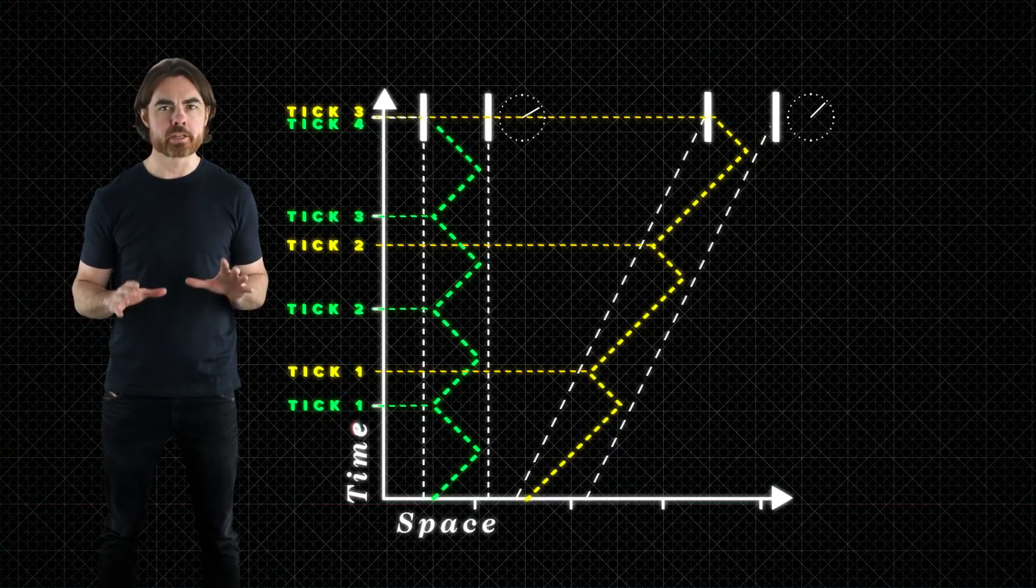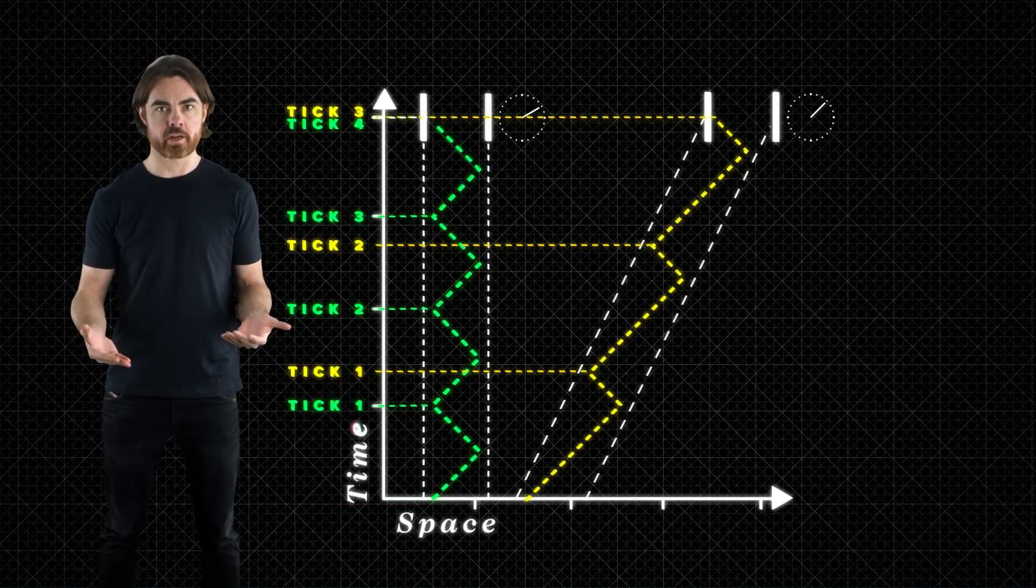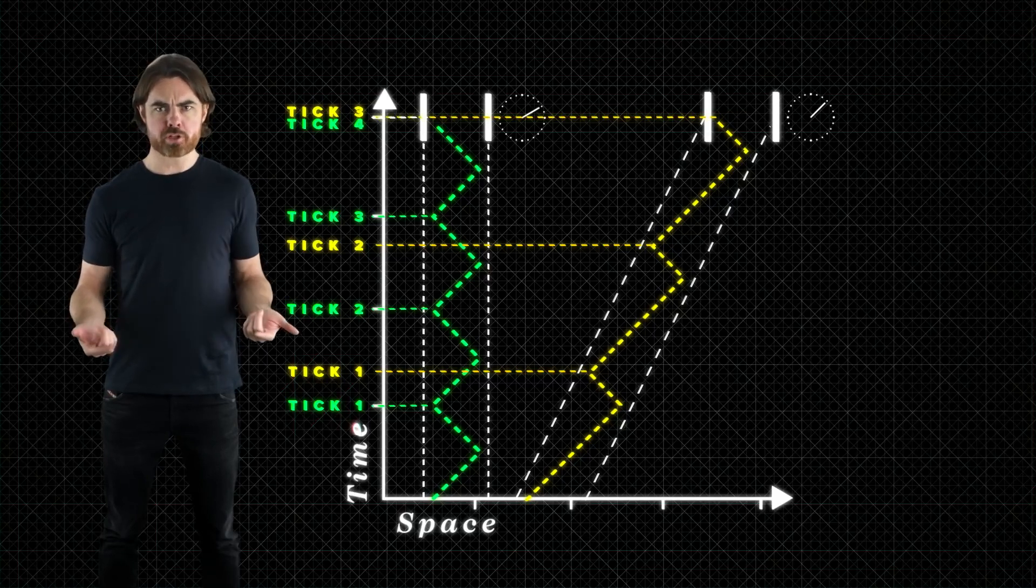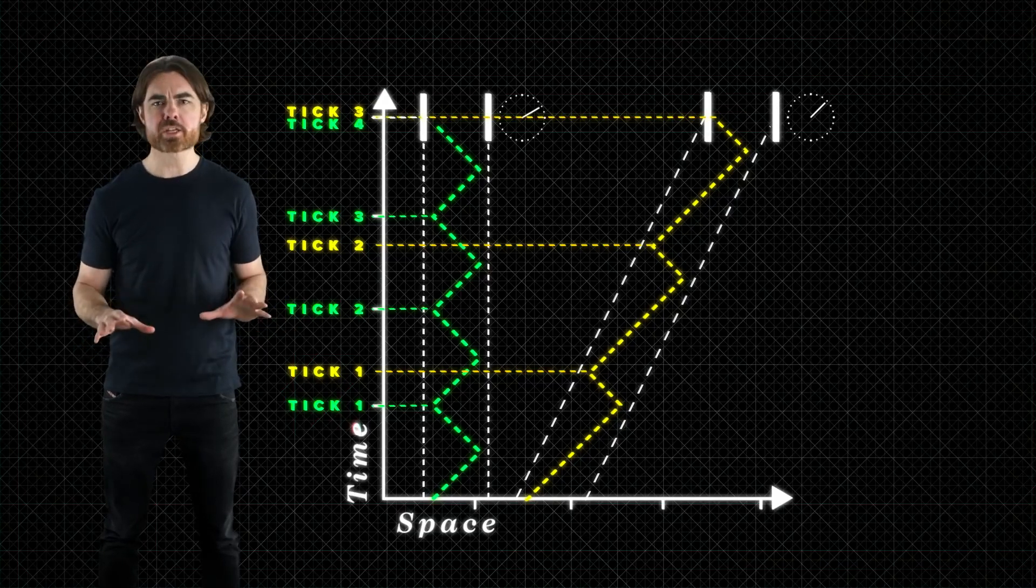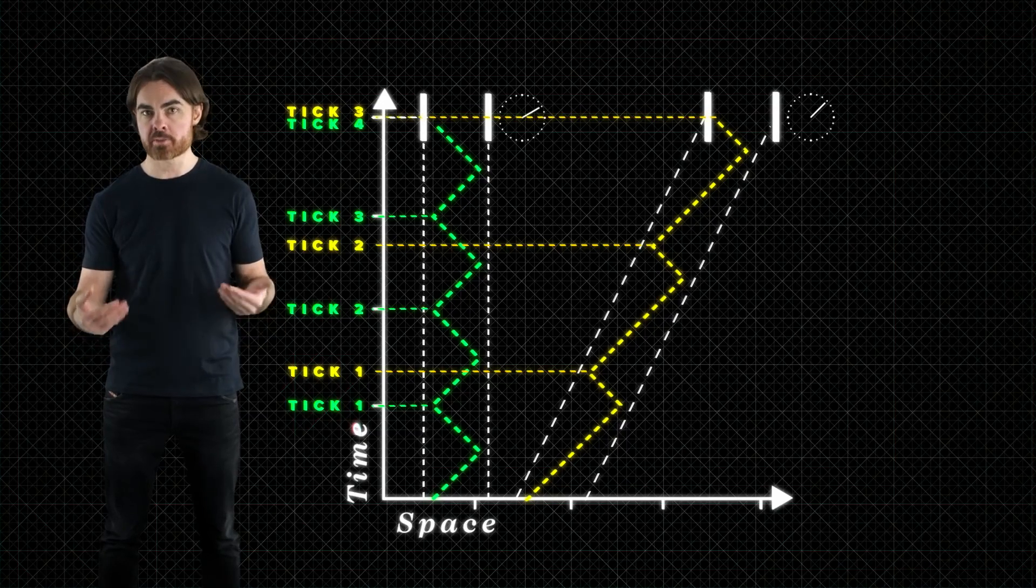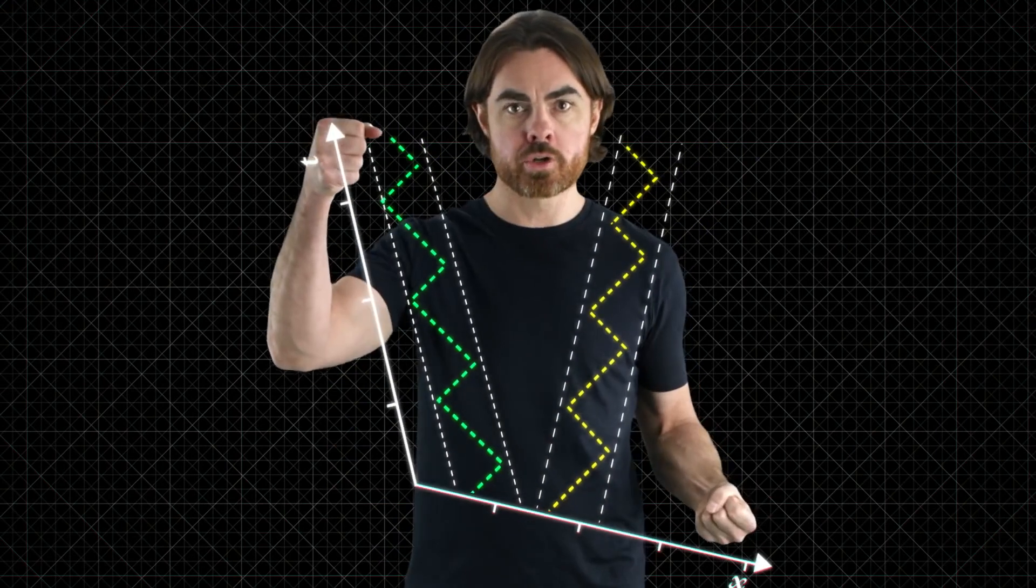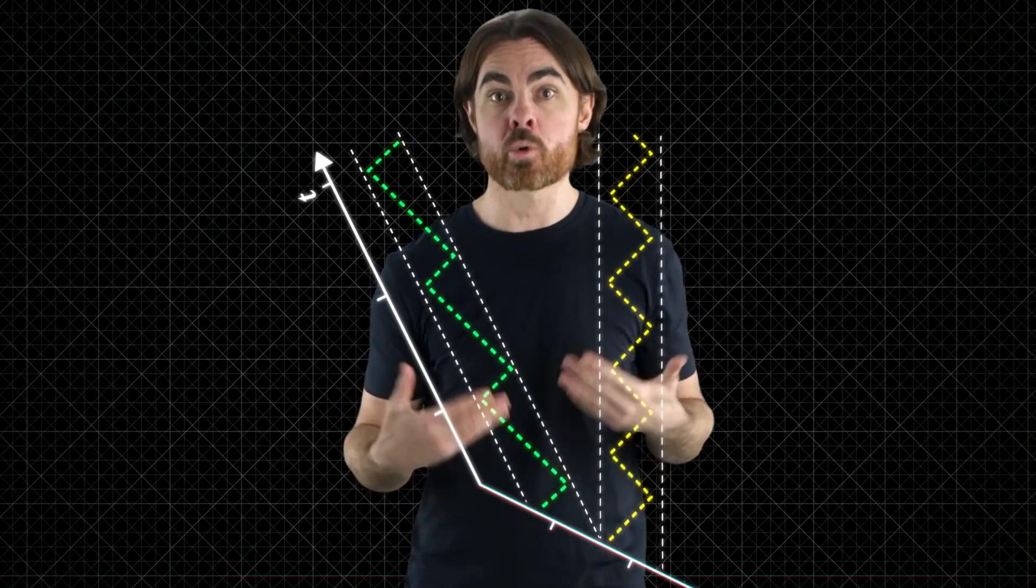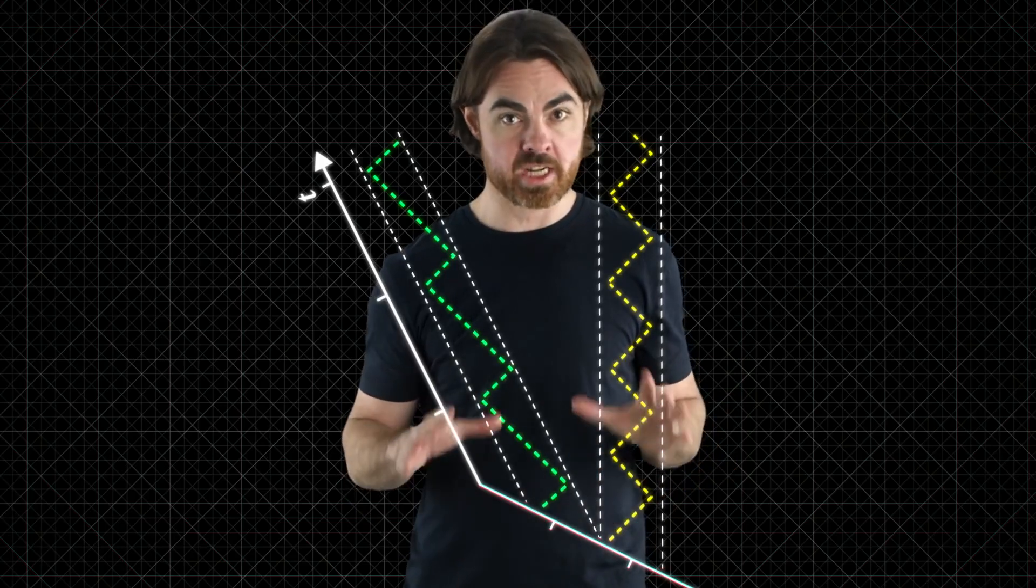Now, that means that in the frame of reference of the moving clock, it is stationary. And from that frame, the first clock appears to be moving. The whole space-time diagram can be transformed to give the second clock's world line a constant location in space. Stretch these corners and squish these ones like this, and we're basically applying the Lorentz transformation, which we discussed a while ago.